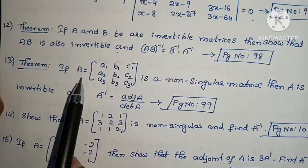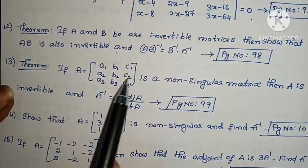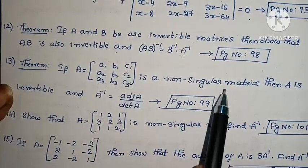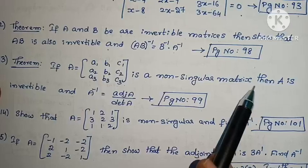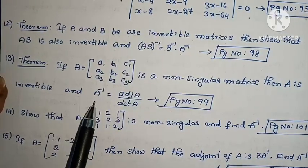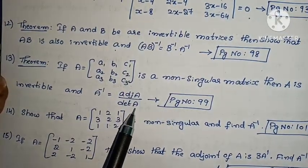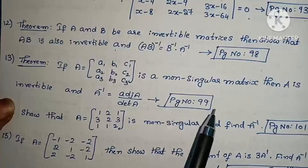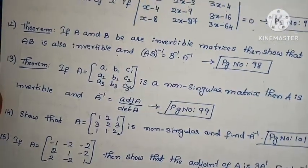Next theorem: if A equals to [a₁, b₁, c₁; a₂, b₂, c₂; a₃, b₃, c₃] is a non-singular matrix, then A is invertible, and A⁻¹ = adj(A)/det(A). You need to prove this. Page number 99 in the textbook.